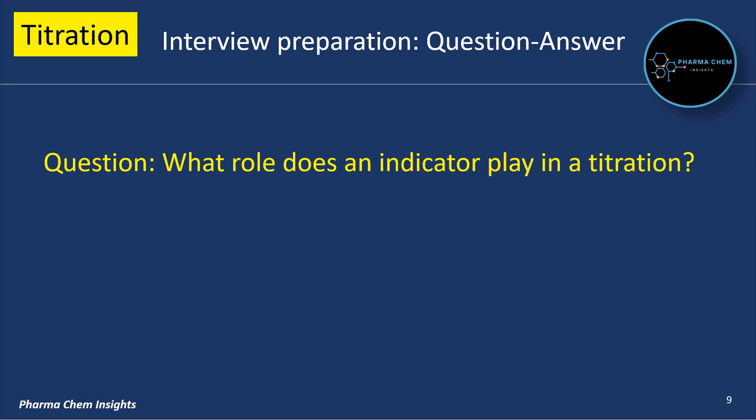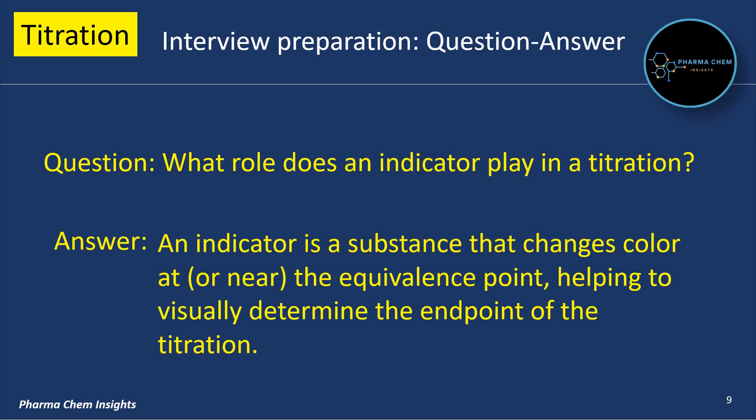Next question: what role does an indicator play in a titration? An indicator is a substance that changes color at or near the equivalence point, helping to visually determine the endpoint of the titration.